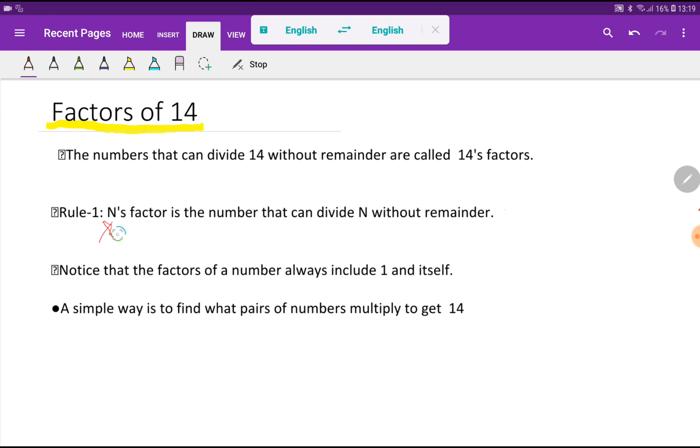What do we mean of the factor of n? n's factor is the number that can divide n without remainder. That is, this is the definition of factor. Now what is the definition of the factors of 14? The numbers that can divide 14 without remainder are called 14's factor.